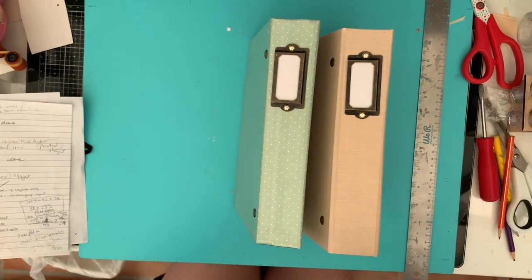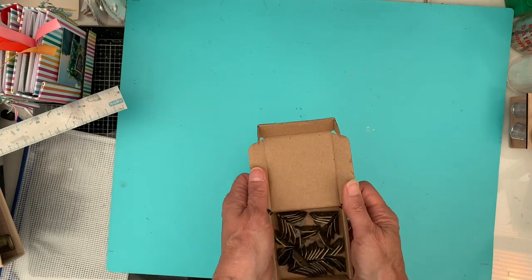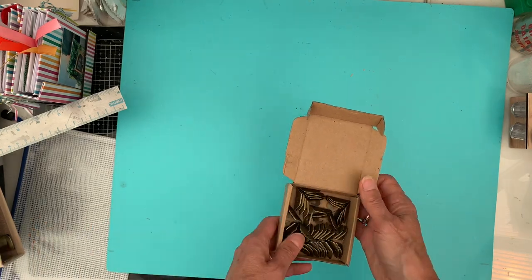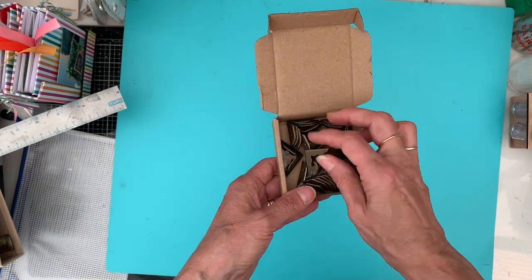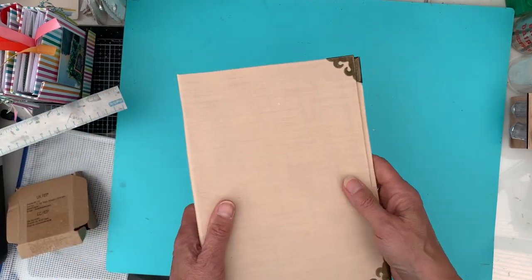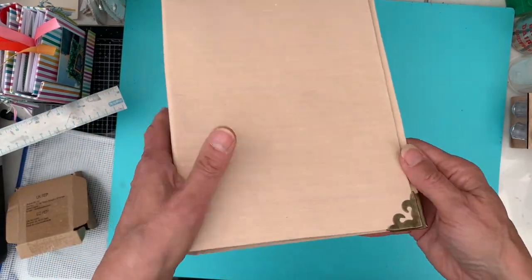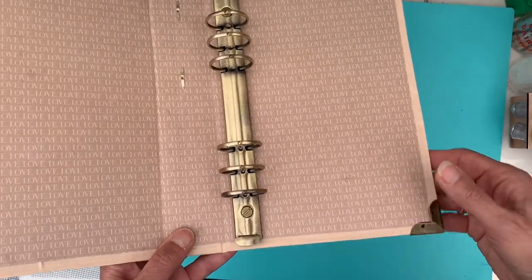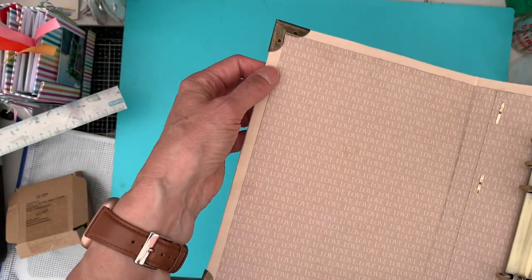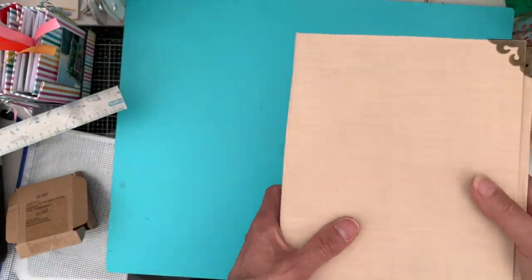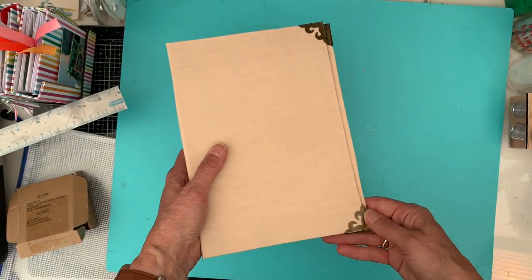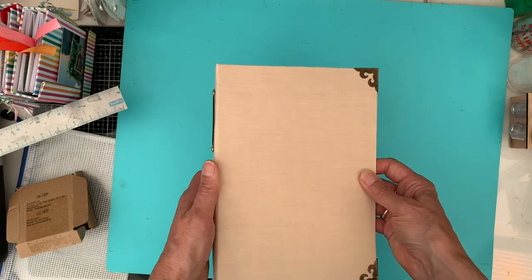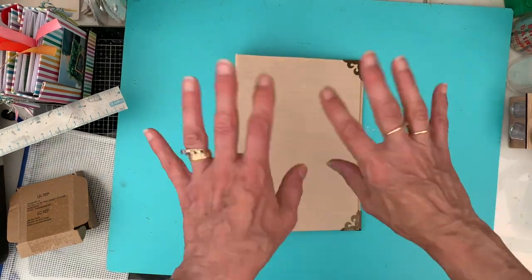So I was just going to finish off voicing over making the album and these corner protectors arrived in the post. Got them off Amazon. So I thought I'd just show you how it looks having put them on. So you now can't see where I messed up very slightly on the corners. They're really nicely done and they go really nicely with the book plate. So that is now my finished album. Okay, thanks for watching and I'll be back again with another video very soon. Bye for now.